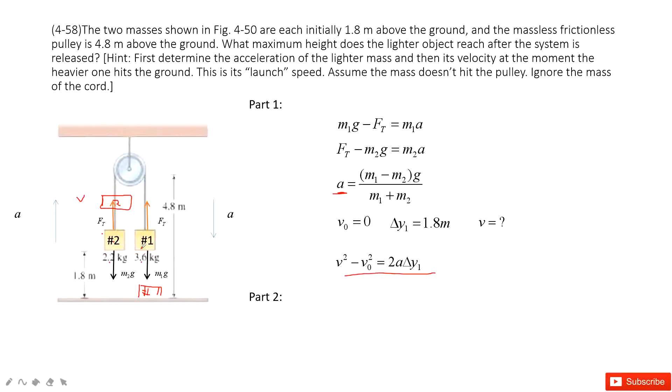So for part 2, when number 1 hits the ground, we can see, then what happens? This cable becomes loose. So the tension acting on this cable becomes zero. Because when number 1 hits the ground, there is still velocity. This number 2 will move up. When it moves up, this cable doesn't act as force on it.